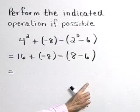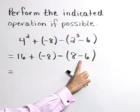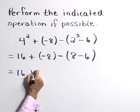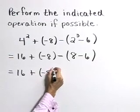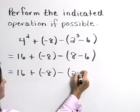As the next step, let's continue in our grouping symbol here with 8 minus 6. Writing each step out completely, 16 plus negative 8 minus 2.